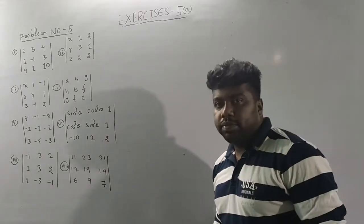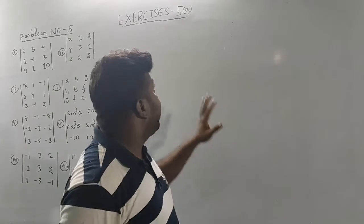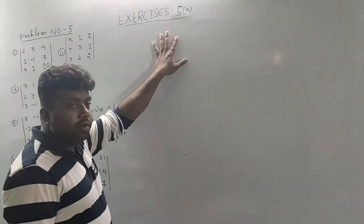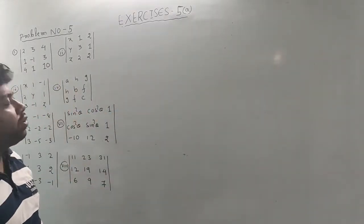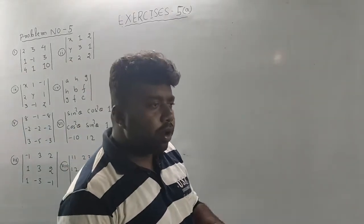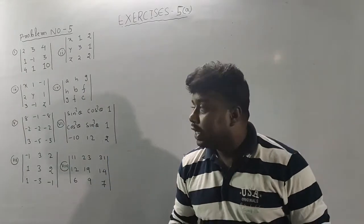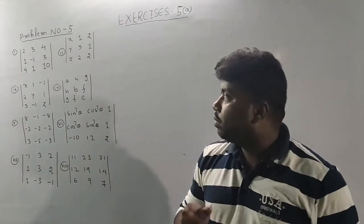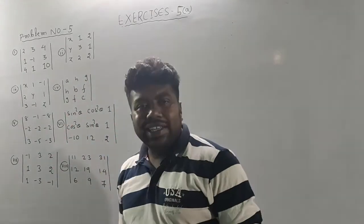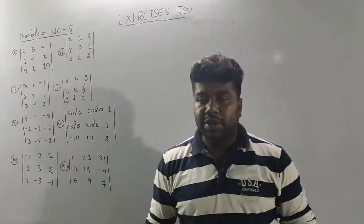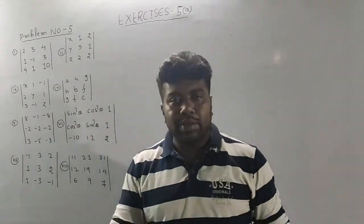Good evening, students. What are you doing? Determinator 5A, number 5, continue. The number 4 is completed. How do you start? The basic easy question is that you don't have tension, so we have to expand the answer.